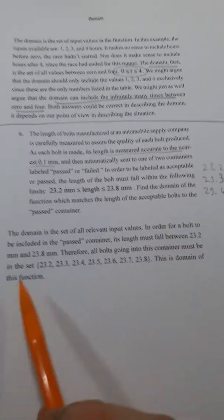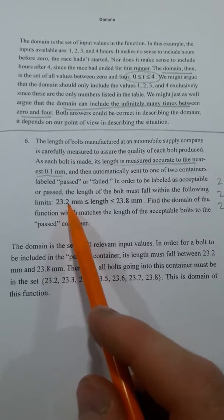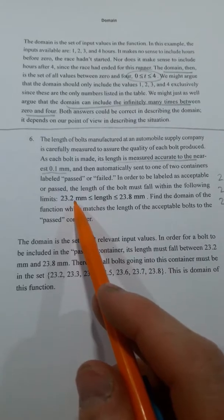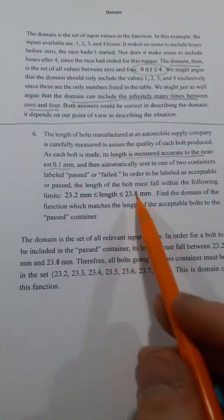So when I look at this data, I'm going to have all numbers that are like within 0.1 millimeter. So 23.2 and then 23.3 and then 23.4, 23.5 all the way up to 23.8.